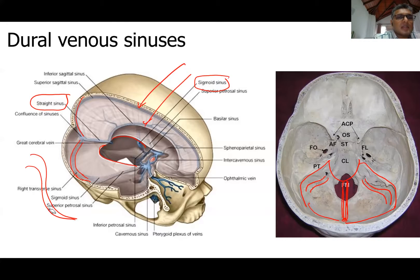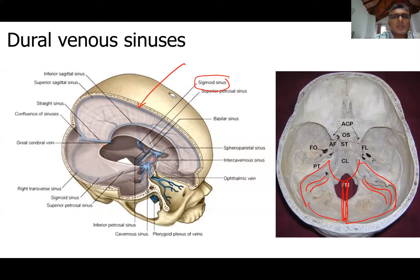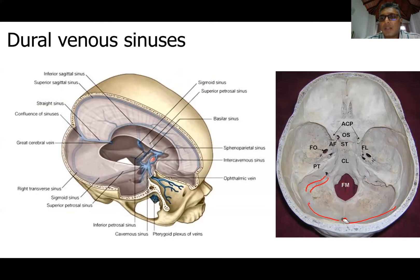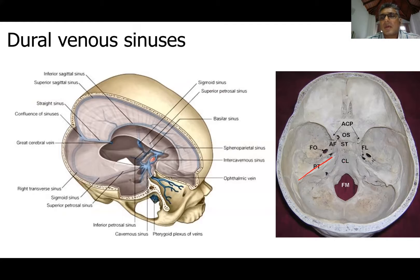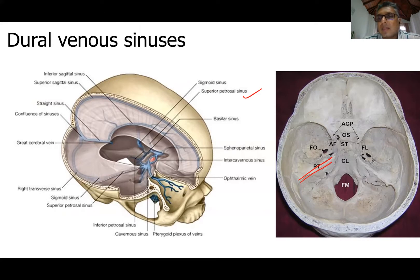Coming back to the dural venous sinuses: we now know the superior sagittal sinus, inferior sagittal sinus, straight sinus, transverse sinus, and sigmoid sinus. When the tentorium cerebelli attaches to the petrous temporal bone, the layers separate out and form a small sinus called the superior petrosal sinus. There is also a very small inferior petrosal sinus formed in the same way.